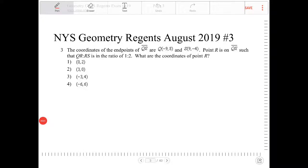The coordinates of the endpoints of QS are given. Point R is on QS such that QR and RS is in the ratio of 1 to 2. What are the coordinates of point R? We're going to draw these points.